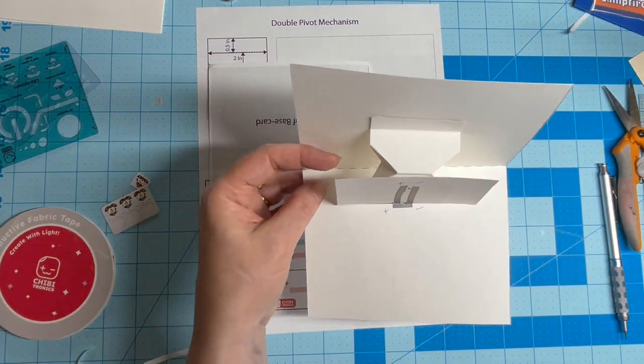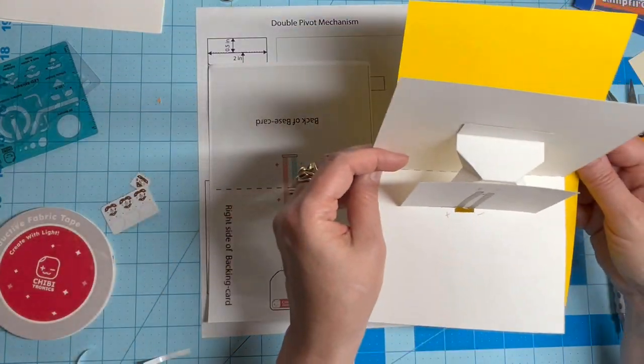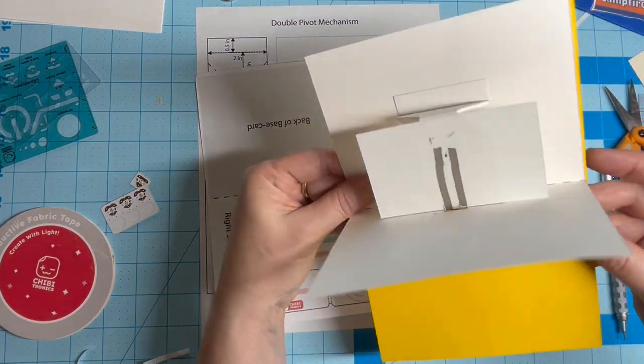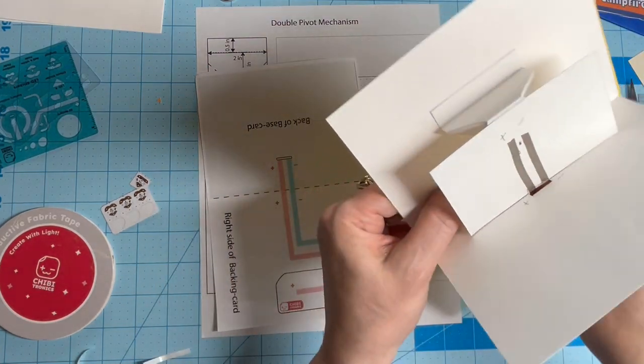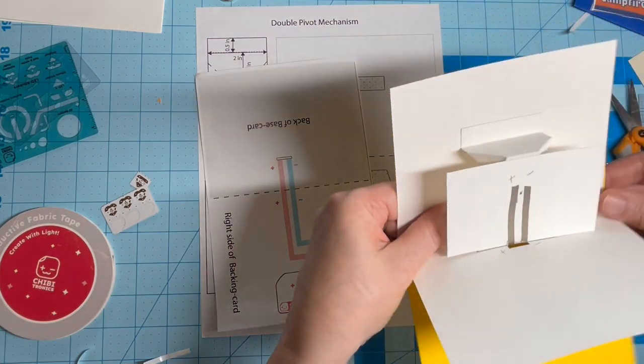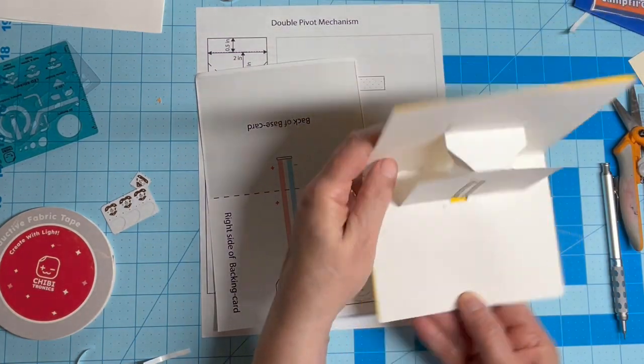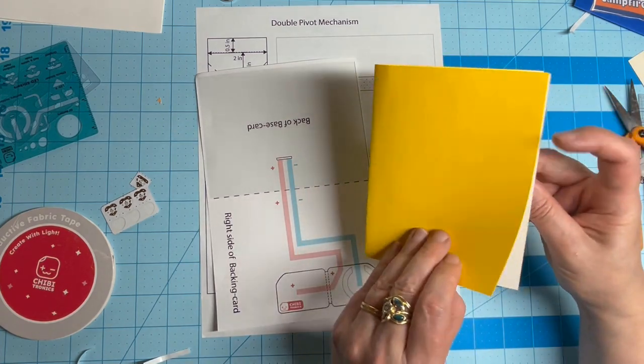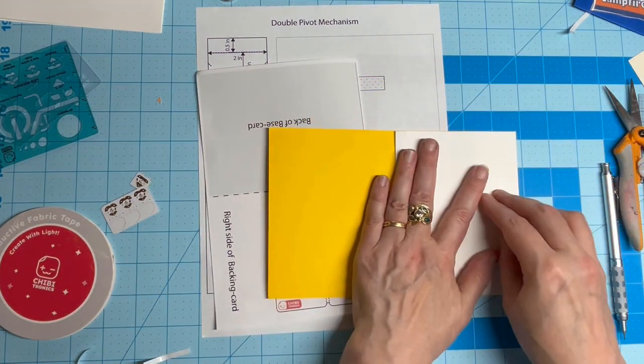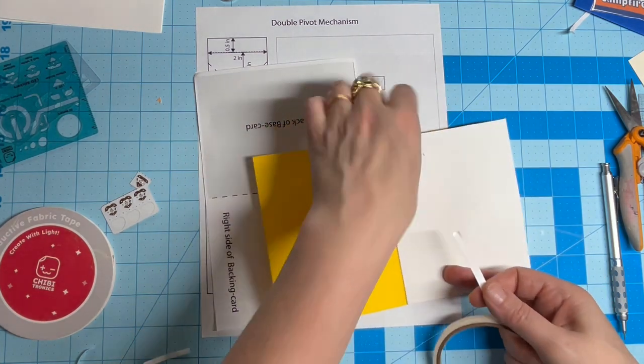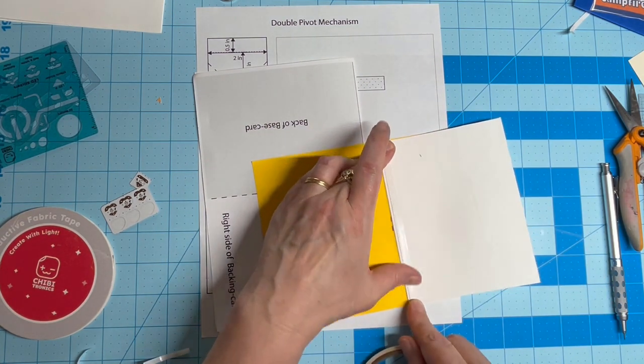The next step is to adhere the yellow backing card. Orient the left side of the backing card so that the conductive traces are on the other side of the crease. Use a piece of double-sided tape on the crease to hold the pieces together.